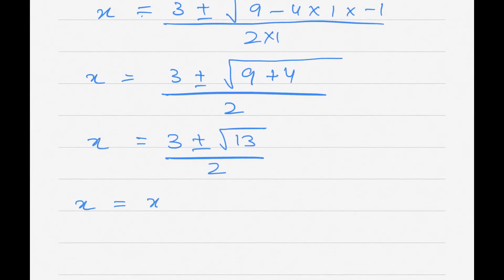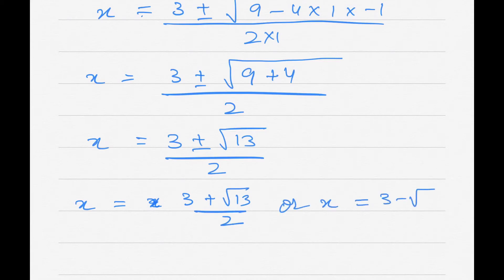So the two roots are: x = (3 + √13) / 2 or x = (3 - √13) / 2. These are the two answers for part one.